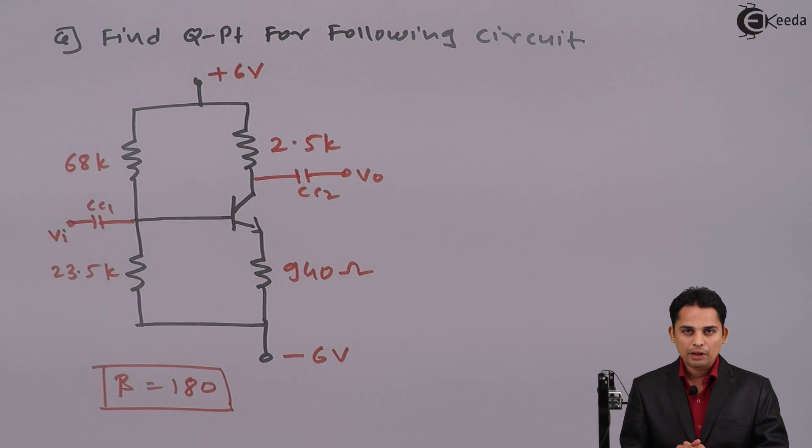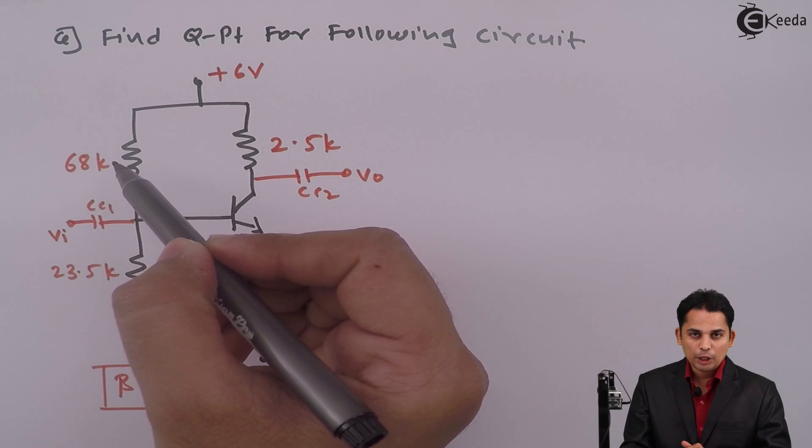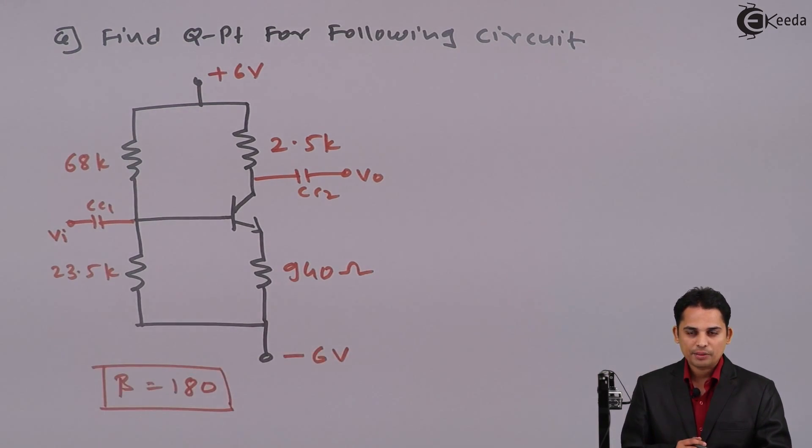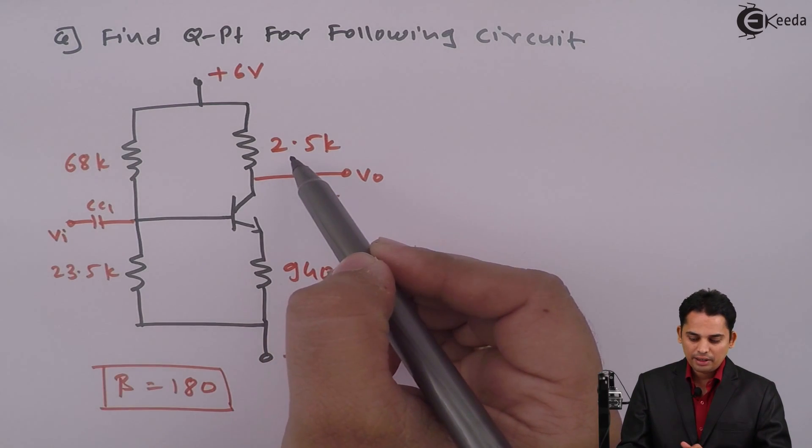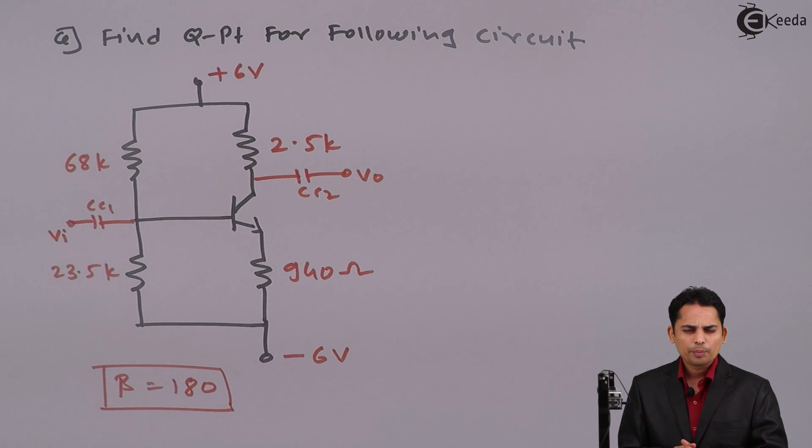First we will identify whether this is voltage divider bias or not. Now as there are two resistors at the input side R1 and R2, definitely it is voltage divider bias. Then there is a resistor at the collector and the emitter. So it is definitely voltage divider bias but there is a slight modification in the circuit diagram.